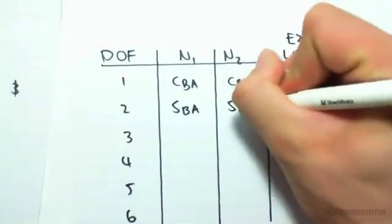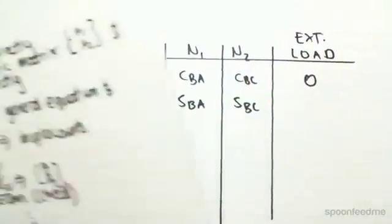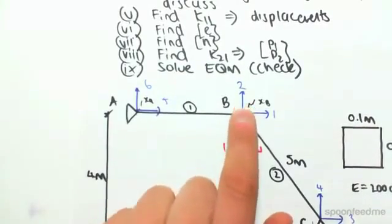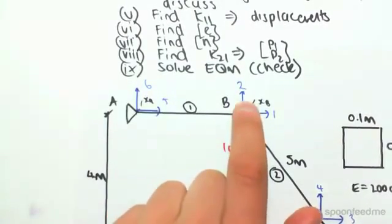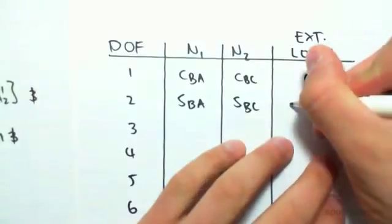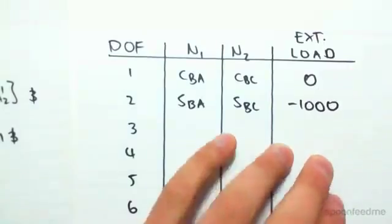Okay? So, sine BC. And the external load at degree of freedom 2, that's given as positive. Up is positive, so plus. So, we're going 1,000 kilonewtons down. So, we're going to have a load of minus 1,000 kilonewtons.